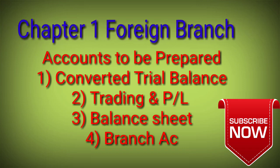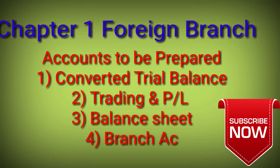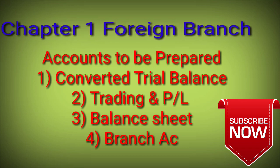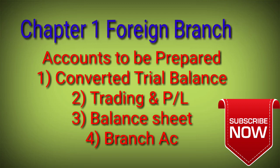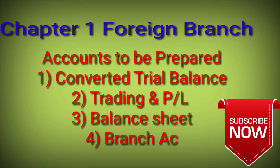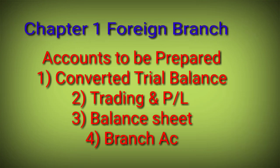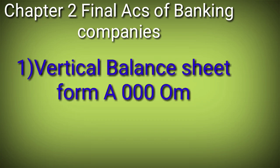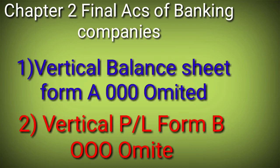Third, we have to prepare the Balance Sheet, which is in horizontal format. A small balance sheet will be covered here. Fourth is an optional factor - sometimes you will be asked to prepare a Branch Account, but usually the first three points are what you must prepare.